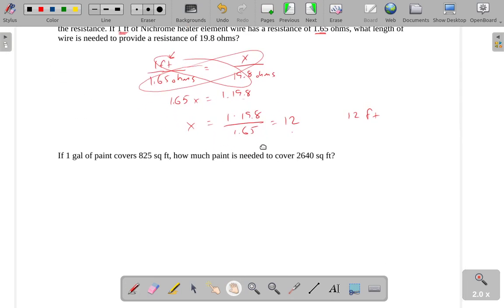Another example, if we have one gallon of paint that covers 825 square feet, how much paint is needed to cover 2,640 square feet? Oftentimes, they sell paint and they say how many square feet of coverage it gets. And you knew that you had a job that's going to require this much paint.